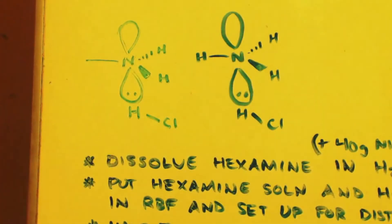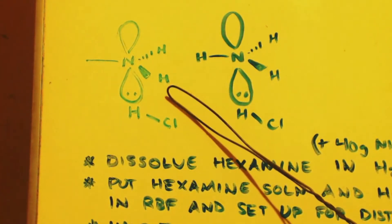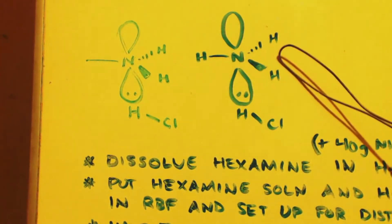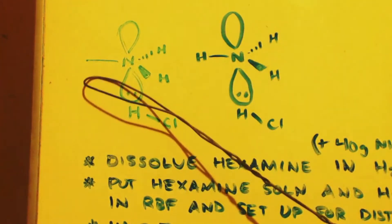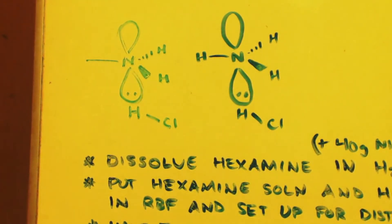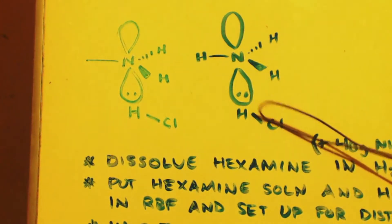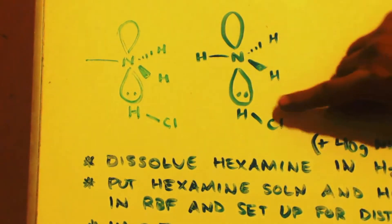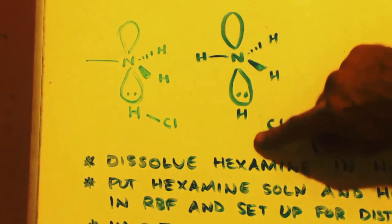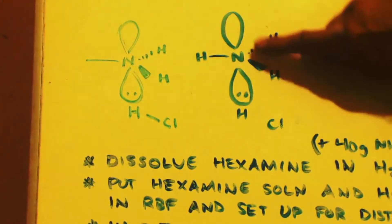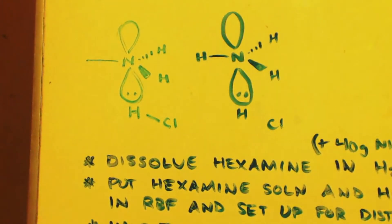Now I want you to notice the difference between methyl ammonium chloride (methylamine hydrochloride) and ammonium chloride — it's just this: ammonium chloride had a hydrogen removed and a methyl group put on. That's the only difference. The HCl links up the same way with this dative bond and coordination complex. When you separate it, you'd have a chloride anion and your NH4 cation.